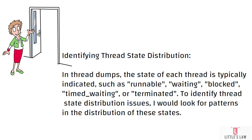For example, if a significant number of threads are in the waiting state — which you can observe from your thread dump — it could indicate contention points where threads are waiting for resources to become available. Similarly, if threads are frequently transitioning between runnable and blocked states, it suggests potential locking or synchronization issues. This is how you identify the thread state distribution.